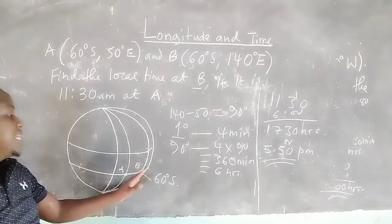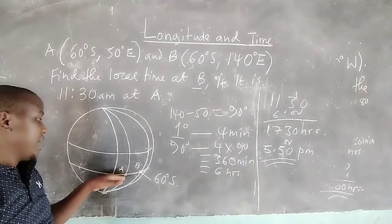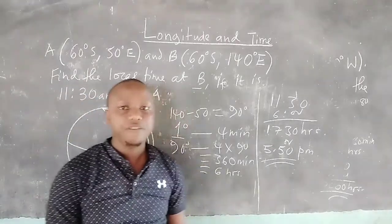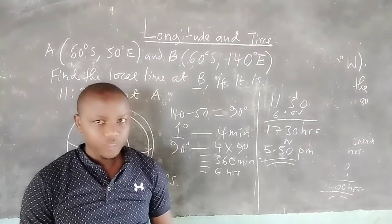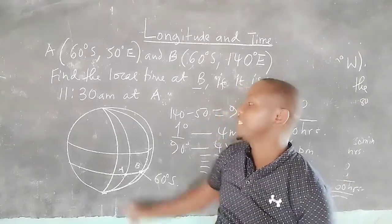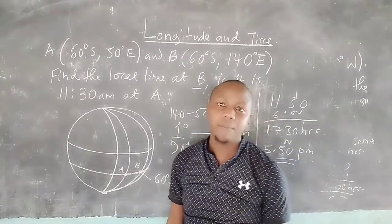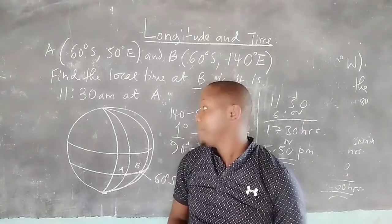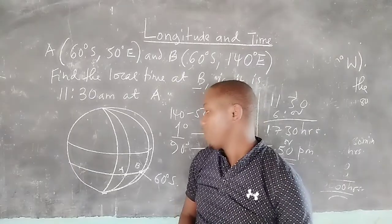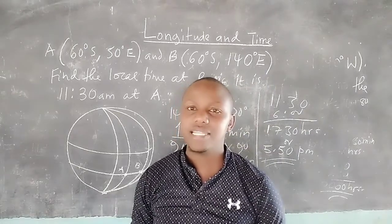B is ahead in time because it is farther east compared to A — the farther east a place is, the more ahead it is in time. That is how we get time differences for two places on different longitudes. Just to remind you: if two places are on the same latitude, they have equal time, except of course if they are on different longitudes. Thank you for following — subscribe to Shifting Grids and share this link.